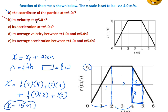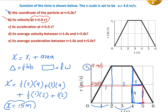What is the velocity at time equals 5 seconds? At time equals 5, the velocity is 2 meters per second.